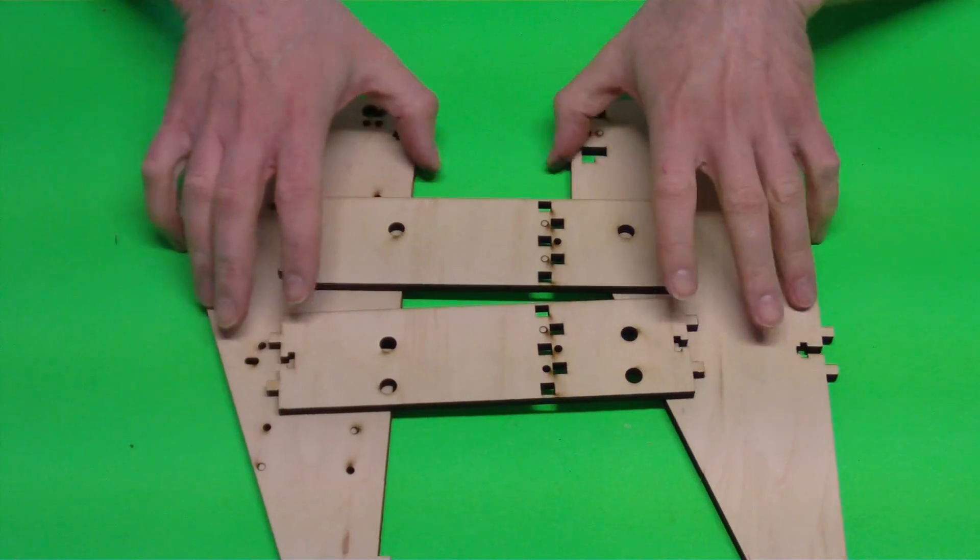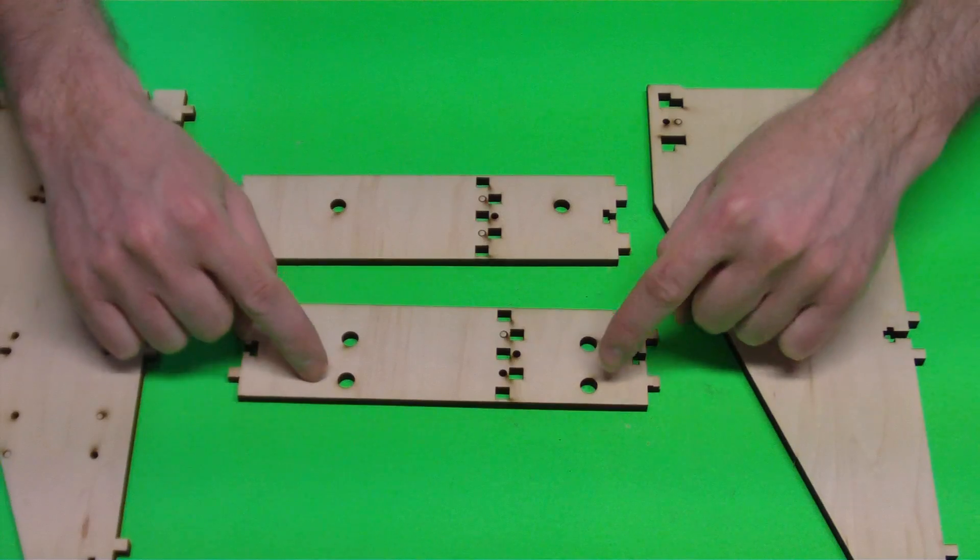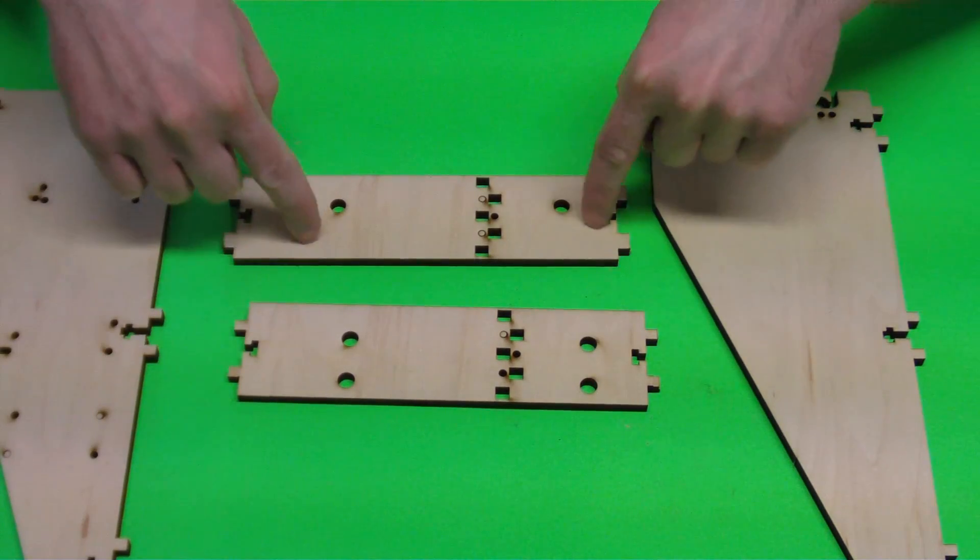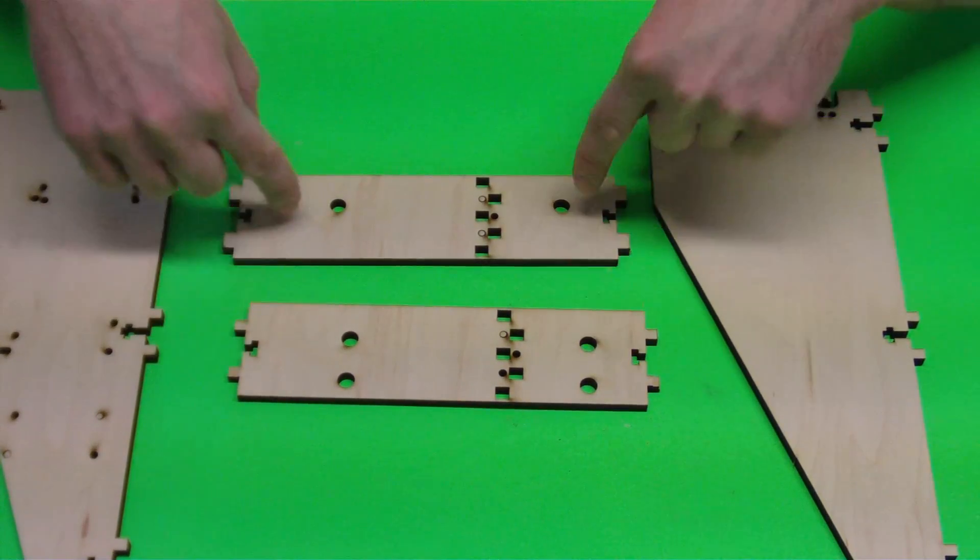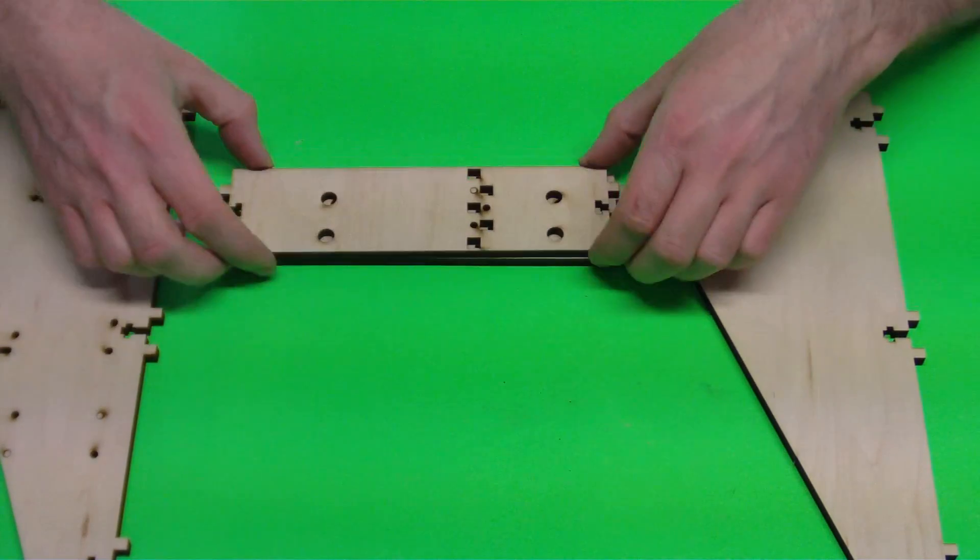What these two plates are, these are to mount our rods. If you notice, they're identical other than this plate has four holes. This one only has two. This one where it only has two, that is the outside plate. The one with four is the inside.